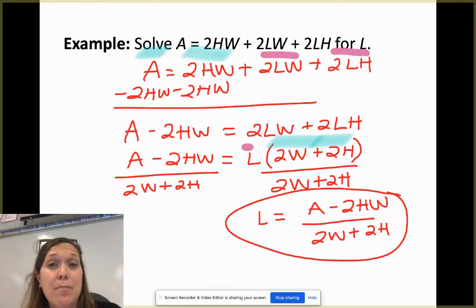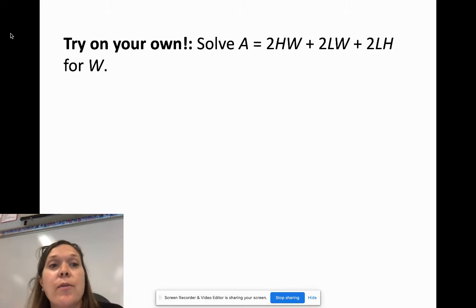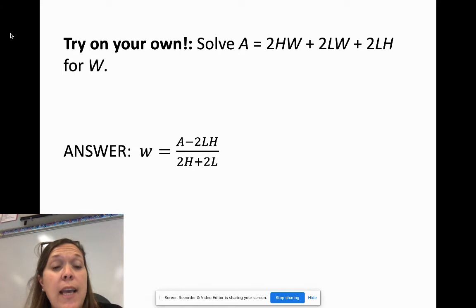So now see if you can use that same formula and solve it for W. Did you get W equals A minus 2LH divided by 2H plus 2L? Hopefully you did. If not, go back and rework it. And if you still can't figure it out, then let me know.